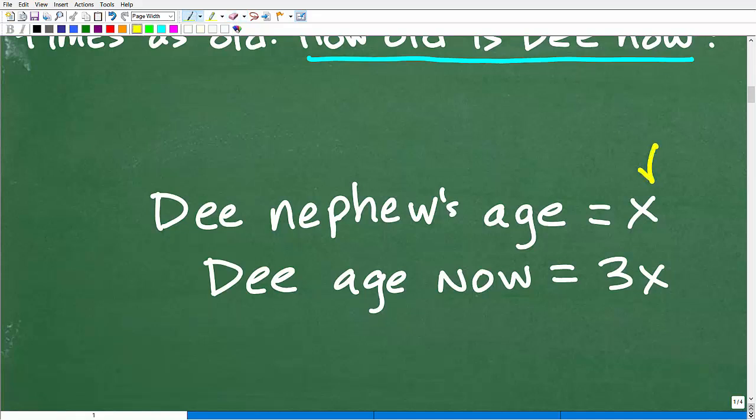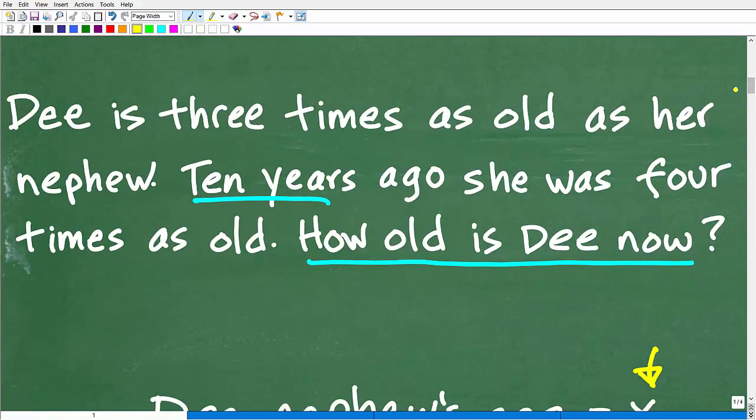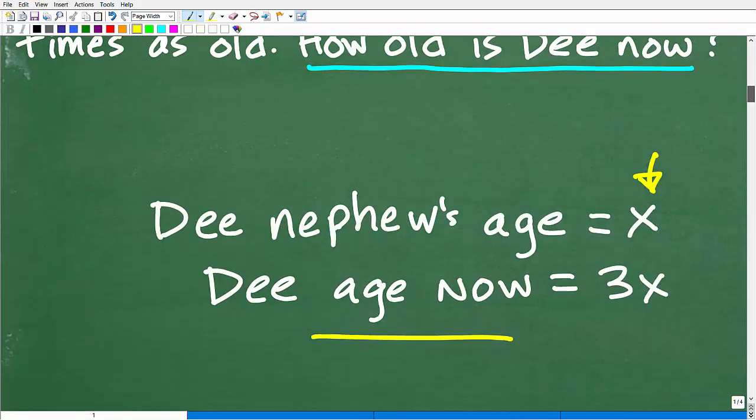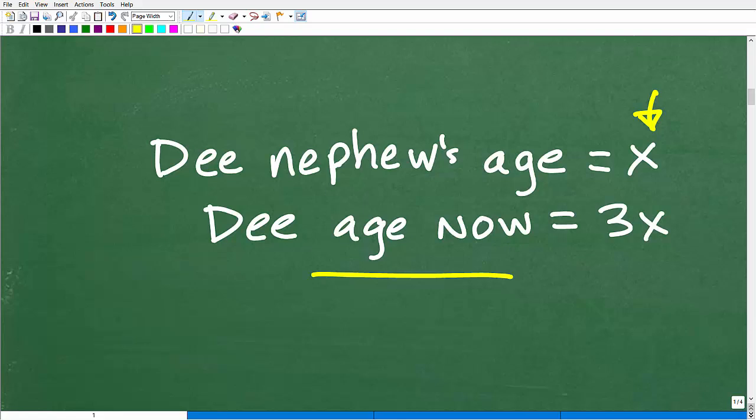We're going to let X, this variable - and remember in algebra, a variable like X just represents an unknown value - we'll let X equal D's nephew's age right now. So if D's nephew's age is X, then D's age right now is 3X. Why is that? Because currently D is three times as old as her nephew. So if her nephew is X years old, then her age is 3X. That is the first part of doing this problem, just assigning a variable.